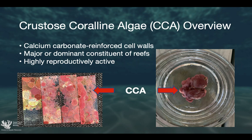I'm going to assume most everybody knows what crustose coralline algae is, but it is a red algae characterized by calcium carbonate reinforced cell walls. It is a major — and in many places dominant — constituent of reefs, particularly in the reef crest area which experiences extremely high wave energy, and it's also highly reproductively active. A colony of CCA that's the size of a microscope slide has the potential to release thousands of spores at one given time, so it's extremely quick to grow.